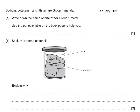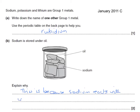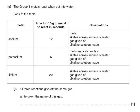Here's a past paper question on this topic. Sodium, potassium and lithium are group 1 metals. Write down the name of one other group 1 metal — well, you could look at the periodic table, let's go for rubidium. It says the name, not the symbol. It also says that sodium is stored under oil — explain why. This is because sodium reacts with water and oxygen from the air. The group 1 metals react when put into water; all three reactions give off the same gas. Write down the name of this gas — the gas is hydrogen.